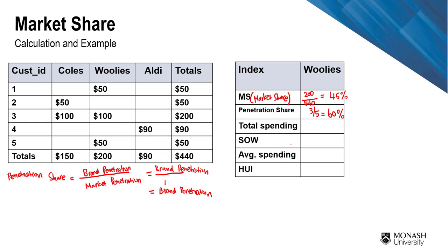Next, we calculate the total spending by Woolworths customers — not just what they spent at Woolworths, but their total spending across all retailers. Customer one spent 50, customer three bought at Woolworths so we count them, and customer five also bought at Woolworths. That gives us 50, 200, and 50. Totalling these up gives 300.